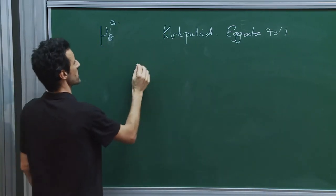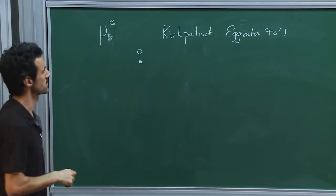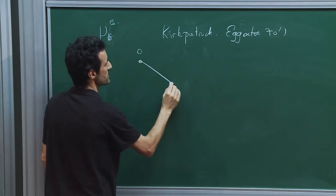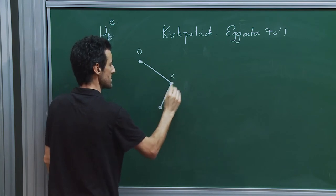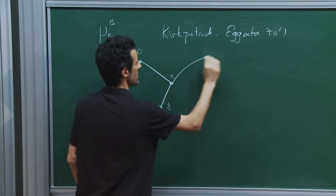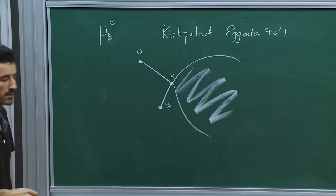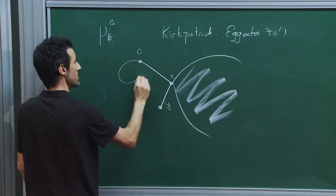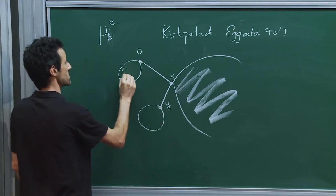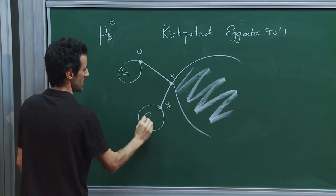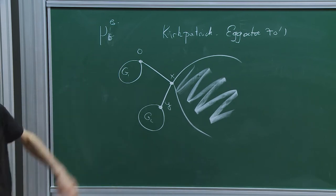The construction is the following. Imagine that you are interested in the spectral measure at the root and your graph looks like this: you have a vertex x, a vertex y, the rest of the graph which could be possibly infinite, and here you have a finite graph g₁ and here a finite graph g₂.